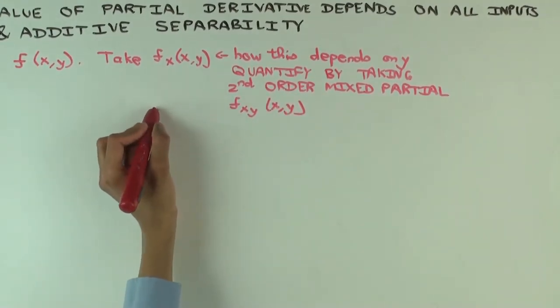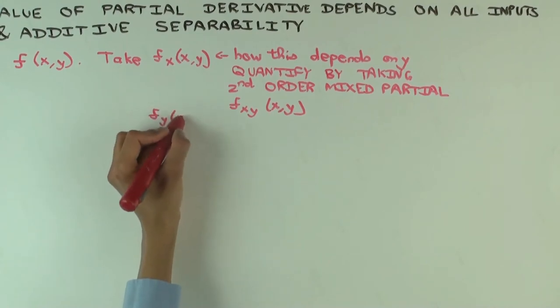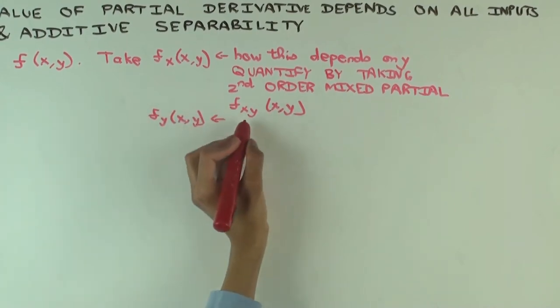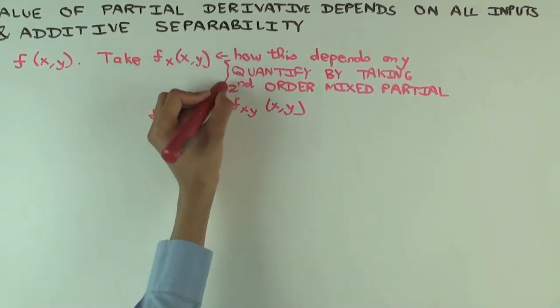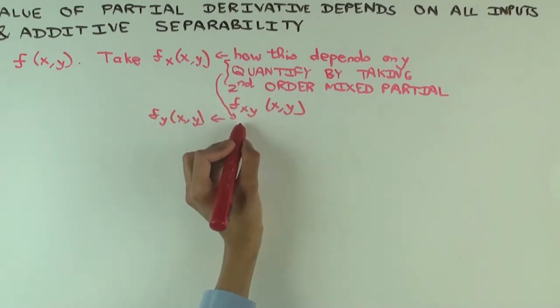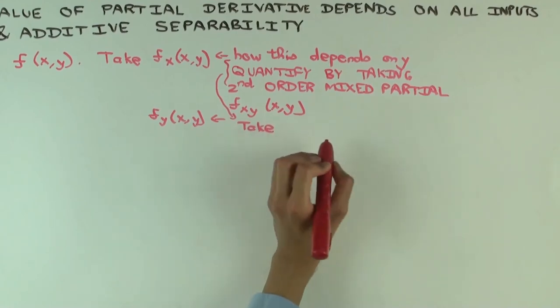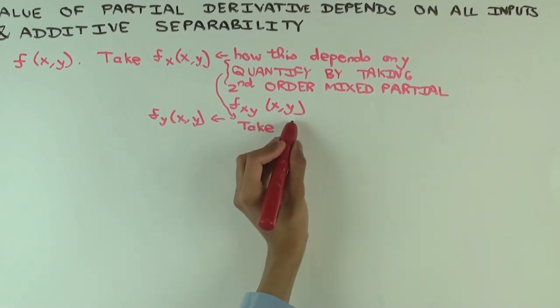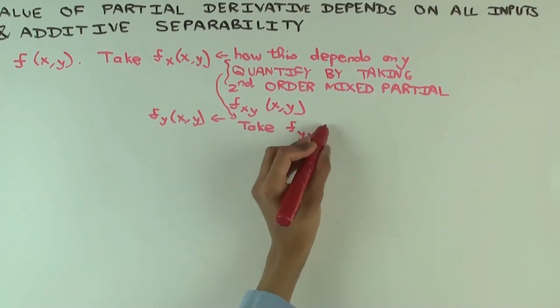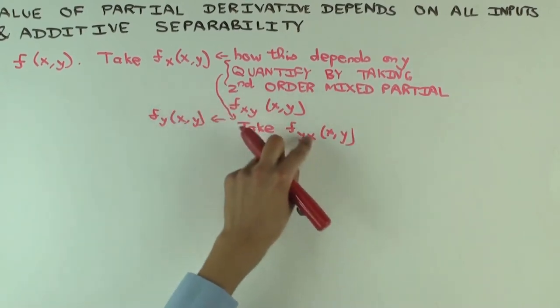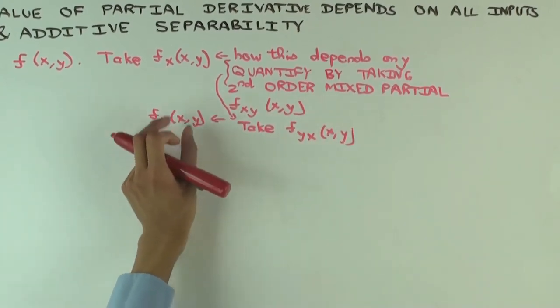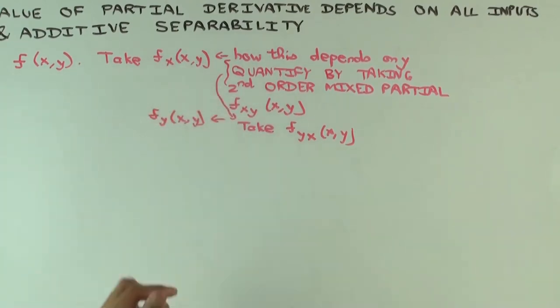Similarly, you could consider F sub y of x comma y. And you figure out how does this depend on x? So the same thing as we have here, we would take, what would we take to quantify the extent to which this depends on x? With respect to x. So F sub yx of x comma y. So these two mixed partials capture the way in which the first order partials depend on the other variable, the variable which wasn't included.